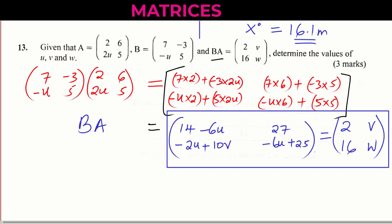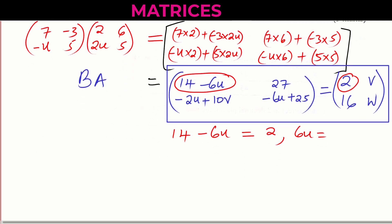Since this one is a 2 by 2 matrix equated to a 2 by 2 matrix, we can simply take this one. The first item in the first row of the first matrix matches directly with the first item in the second matrix. So 14 minus 6U is equivalent to 2. So work out this, and you get 6U is equal to 12. So you get U equals 2.